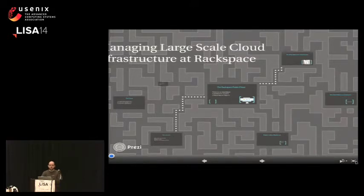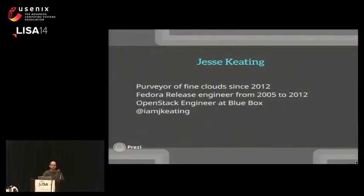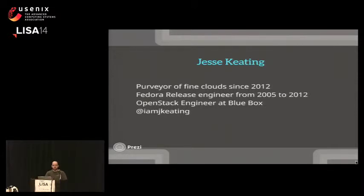We're managing large-scale cloud infrastructure at Rackspace. I am Jesse Keating. I've been doing cloud-type stuff since 2002 when I joined Rackspace — going from zero cloud experience to a very critical position at one of the largest public clouds out there. Before that, I was a Fedora release engineer at Red Hat from 2005 to 2012, doing many Fedora Linux releases and Anaconda work. Currently I'm an OpenStack engineer at Blue Box, a startup here in Seattle just down the road at the entrance of Pike Place Market. The best place to find me is on Twitter at imjkeating.